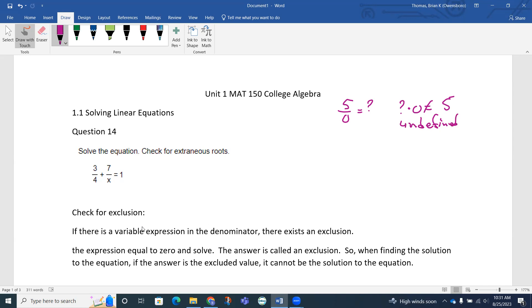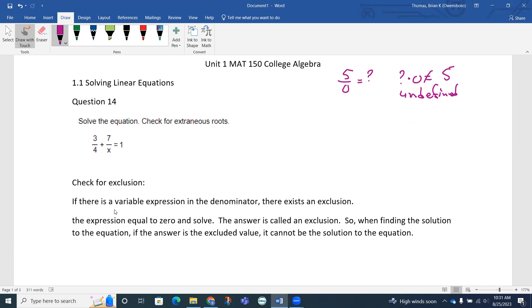In our problem, these extraneous roots are also called exclusions. If there is a variable expression in the denominator, there is going to exist an exclusion. We set the expression equal to 0 and solve. The answer is called an exclusion. In finding the solution to the equation, if the answer is the excluded value, it cannot be the solution to the equation.